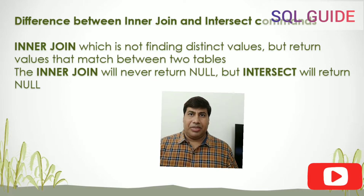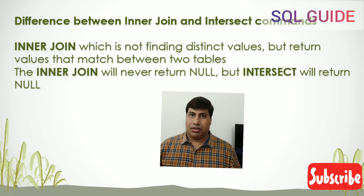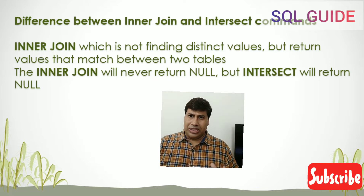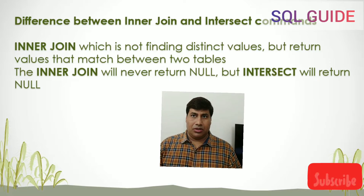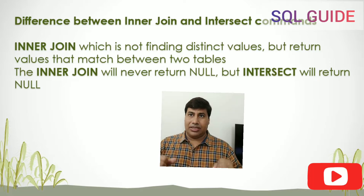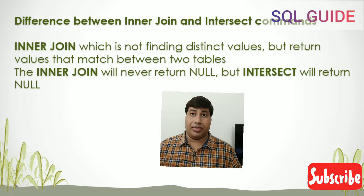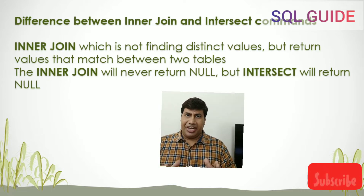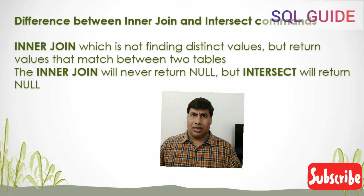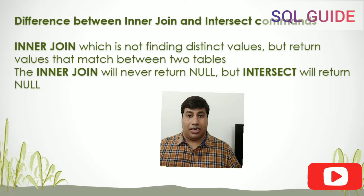Difference between inner join and intersect command: inner join is not finding distinct values, but returns values that match between two tables. The inner join will never return null, but intersect will return null.